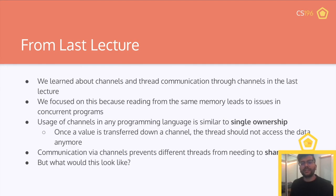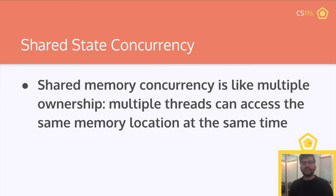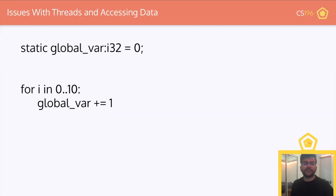So communication via channels prevents different threads from needing to share memory, which makes our lives a little easier because you don't have to worry about having a mismatch of what the data should be. But what if we did want to have shared memory for certain kinds of problems? Sharing memory concurrency is like multiple ownership — multiple threads can access the same memory location at the same time.